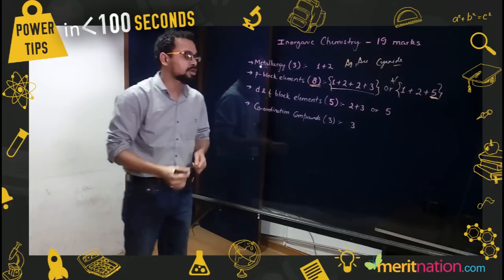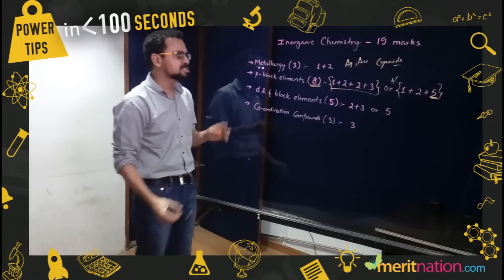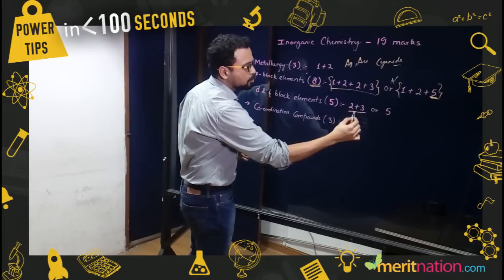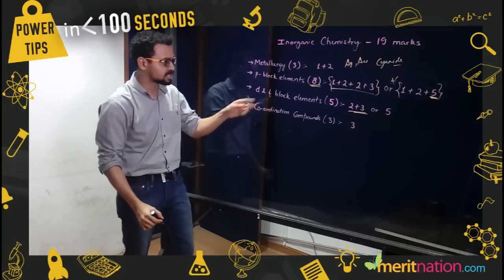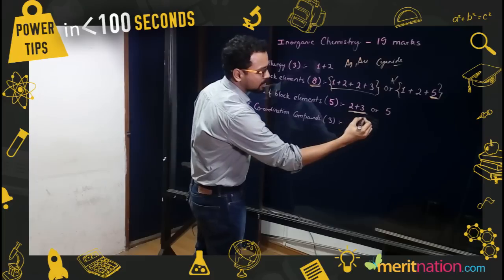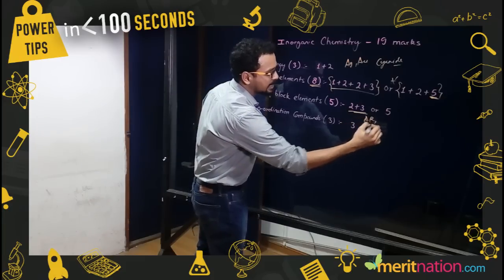D and F block elements typically stick with a 2+3 bifurcation because in this case they specifically talk about different properties like atomic radius and your lanthanoid contraction.